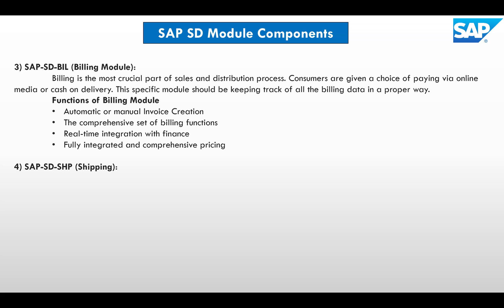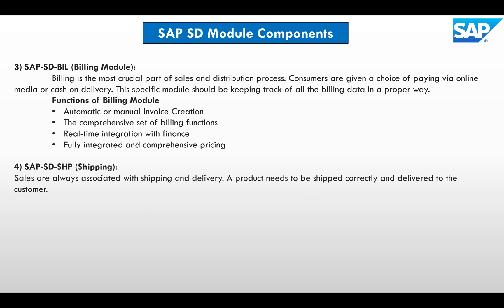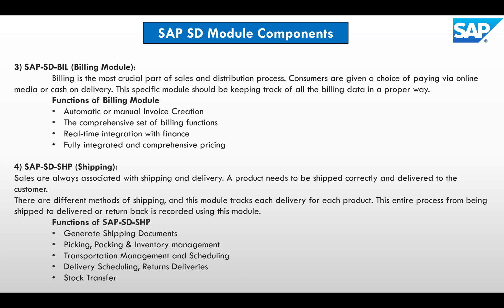Next is the SAP SD Shipping module. Sales are always associated with shipping and delivery — not just making the sale but also taking care of shipping and delivery. A product needs to be shipped correctly and delivered to the customer to maintain a better relationship. The major functions of the shipping component include generating shipping documents, picking, packing and inventory management, transportation management, delivery scheduling, return deliveries, and stock transfer.